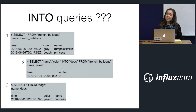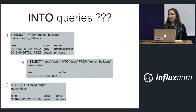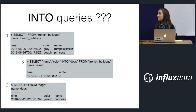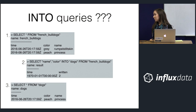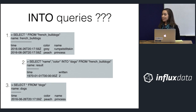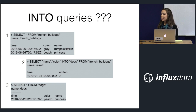Now let's talk about the unusual behavior INTO queries have. Say you have a measurement called 'French_Bulldogs' with two points, and you want to write them to a new measurement called 'dogs' using an INTO query. InfluxDB says it wrote two points — as expected — but when you query 'dogs' you only see one point. What happened? INTO queries turn tags into fields. The tag 'color' was the only thing differentiating the 'Rumpelstiltskin' point from the 'Princess' point, so without it as a tag, InfluxDB assumes a duplicate and overwrites one with the other.